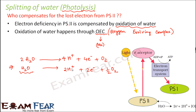The enzyme with manganese is stimulated by the loss of electrons from PS2. When light falls on PS2 and an electron is lost, the OEC or manganese complex gets stimulated and activated. Once this complex is activated, it causes the oxidation of water to form hydrogen ions, electrons, and oxygen.